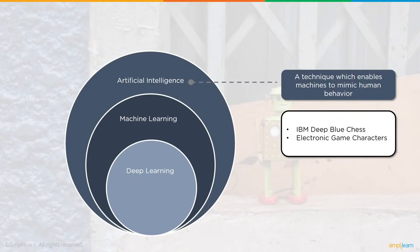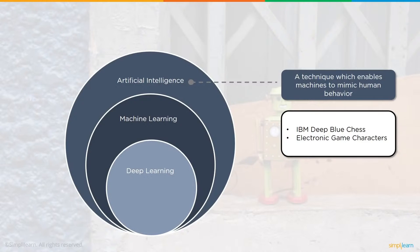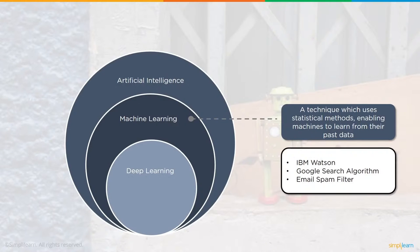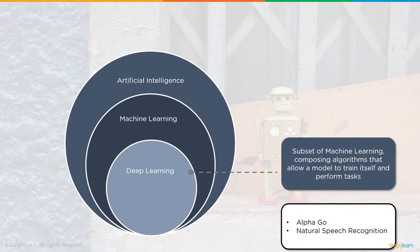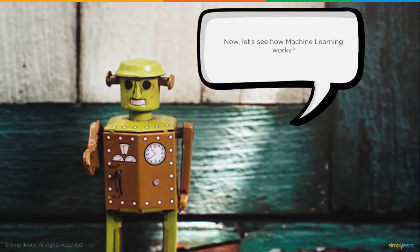IBM Deep Blue and electronic game characters are examples of artificial intelligence. Machine learning is a subset of AI that uses statistical methods enabling machines to learn from past data — IBM Watson, Google's search algorithm, and email spam filters are examples. Deep learning is a further subset, composing algorithms that allow a model to train itself, associated with neural networks. Alpha Go and natural speech recognition are deep learning examples.